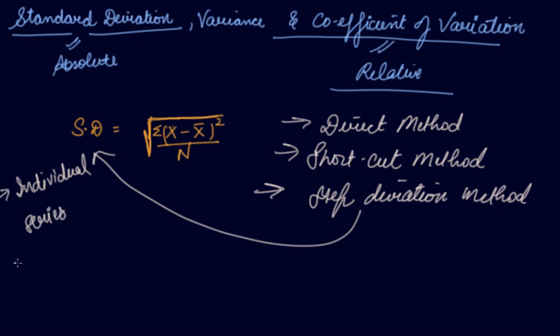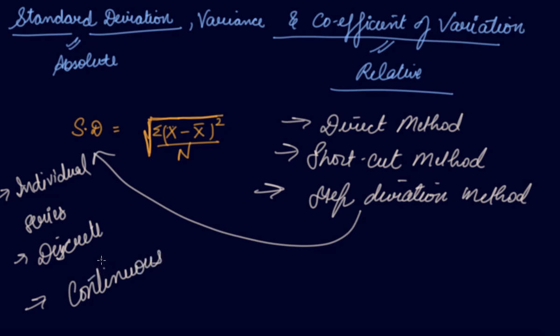The second type is the discrete series or frequency array, and the third is the continuous series or frequency distribution series. We will first calculate the standard deviation from these series.